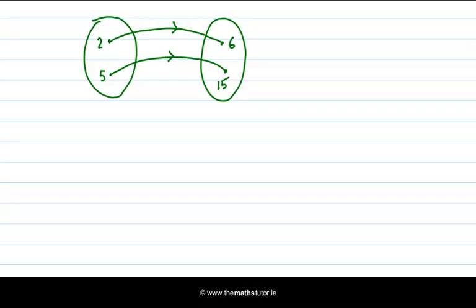For example, you see here the number 2 is mapped onto the number 6 and 5 is mapped onto the number 15. We write functions like this: f(x), in this case, is equal to 3x. That means that f(2) is equal to 3 times 2, which is 6.